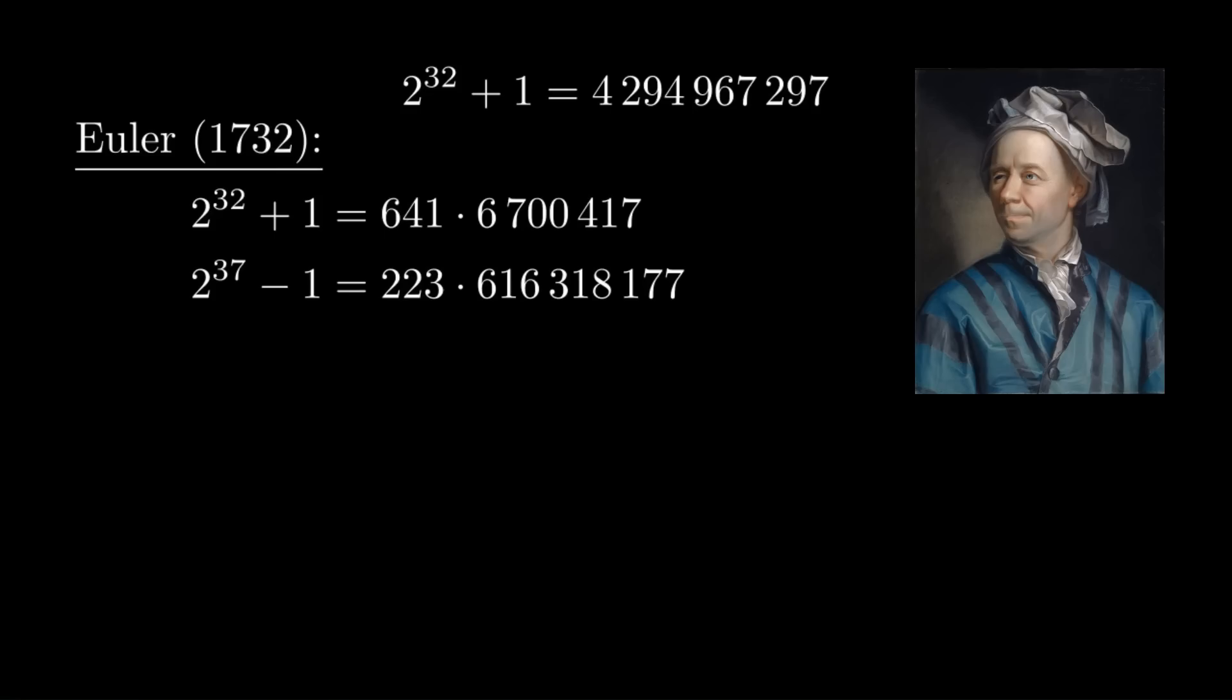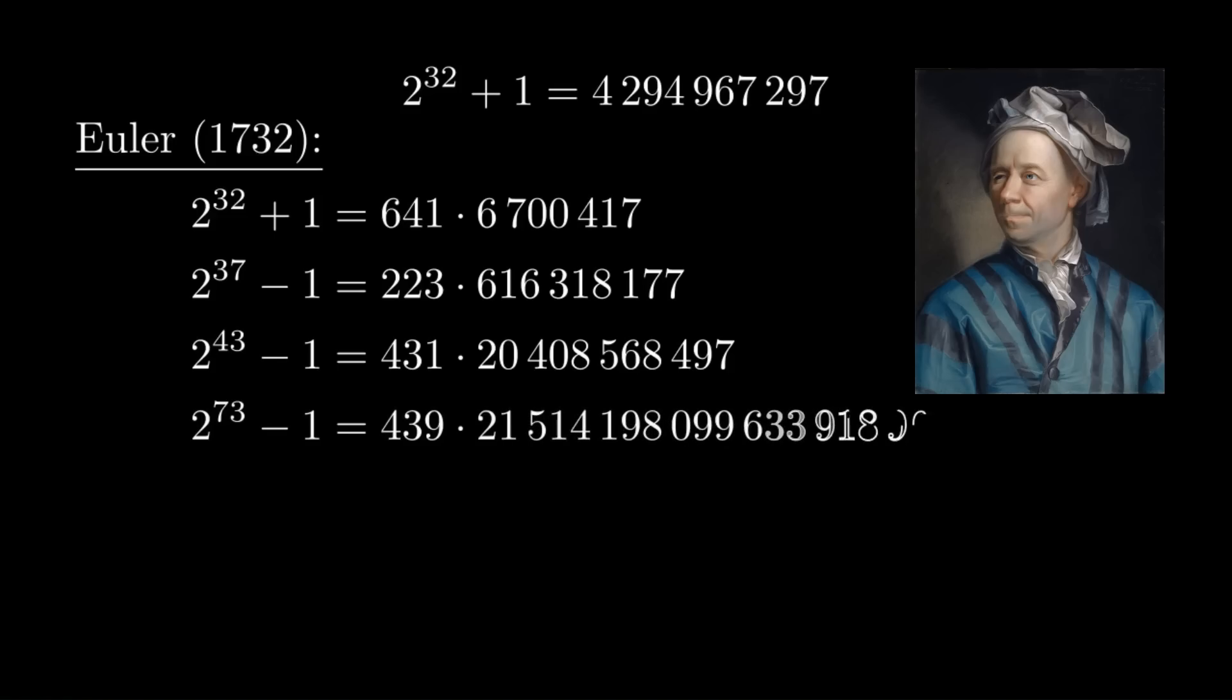For example, 2^37 - 1 is divisible by 223. 2^43 - 1 is divisible by 431. And 2^73 - 1 is divisible by 439. Now, he didn't actually write out these other factors. He just found these smallish prime factors. And then, well, he didn't have the tools to check those other numbers for primality, and they aren't all prime anyway. So it would take a lot more work to factor those. But, anyway, he found some of the factors.